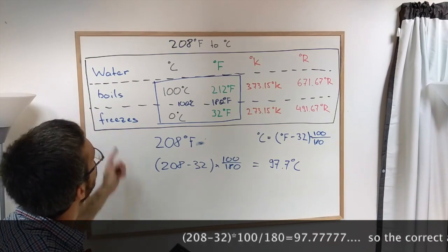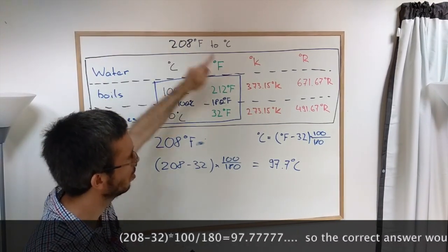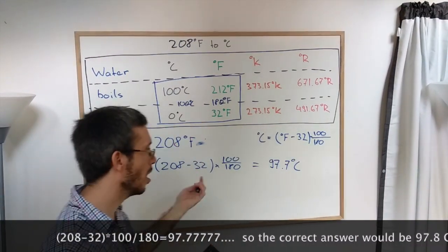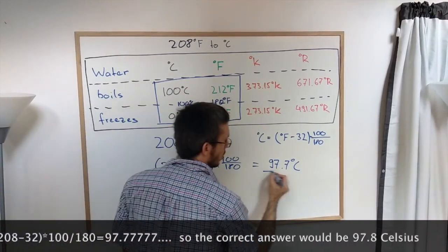If we look at our significant figures, we had three to start. This conversion is actually definition, so we're going to keep three significant figures.